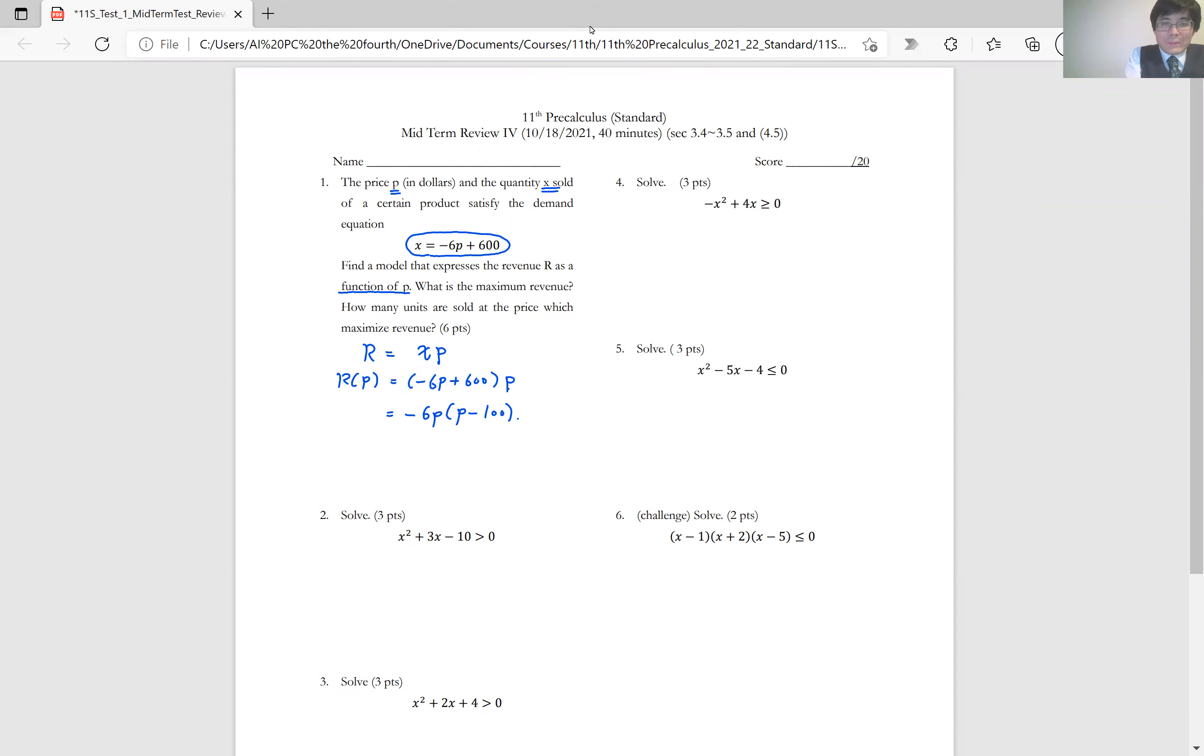Now move on to the next part. I need to find the maximum revenue. What is the maximum revenue? Well, the revenue is in terms of p, and this is a quadratic function. So it's going to be a parabola. Since this is in factored form, the graphing doesn't take much time. The revenue becomes zero when p equals 100 or when p equals zero.